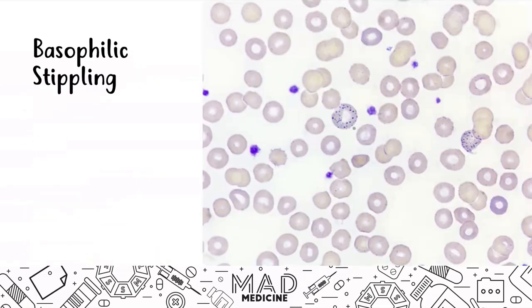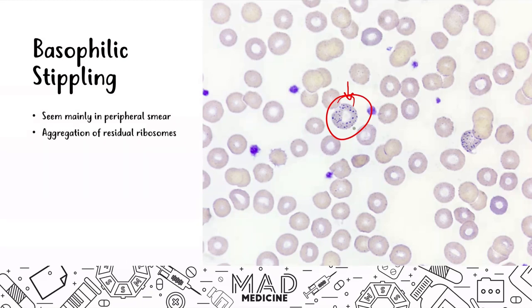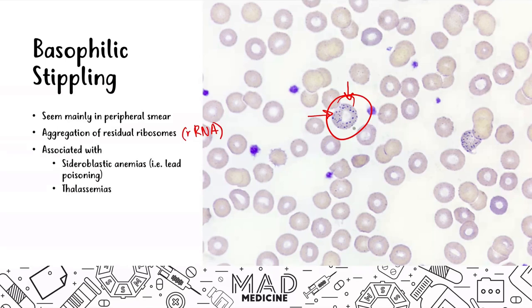Basophilic stippling is characterized by blue deposits within the red blood cells, seen mainly in the peripheral smear. These are due to aggregation of residual ribosomes or ribosomal RNA. When you stain, you're going to see the little blue dots in the red blood cell. These are going to be associated with sideroblastic anemias and also thalassemias — do not forget that.